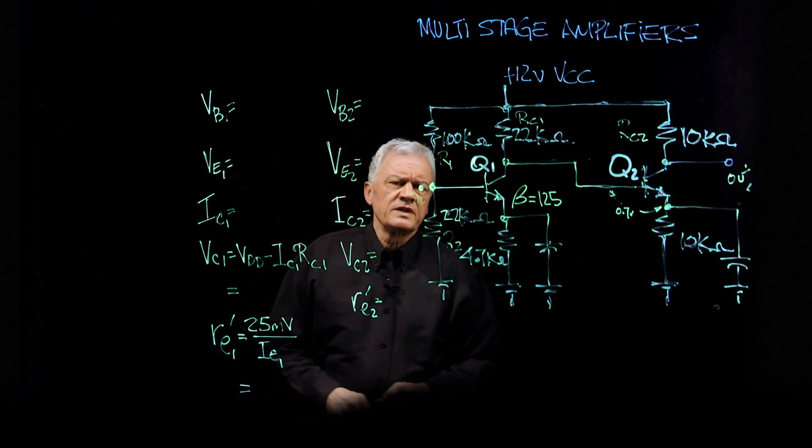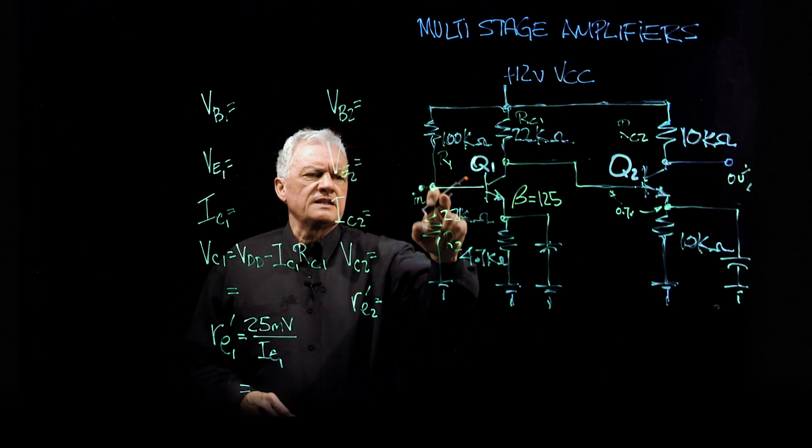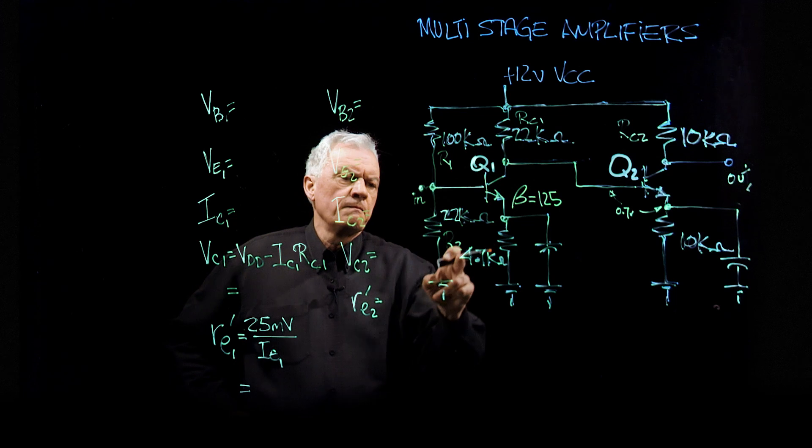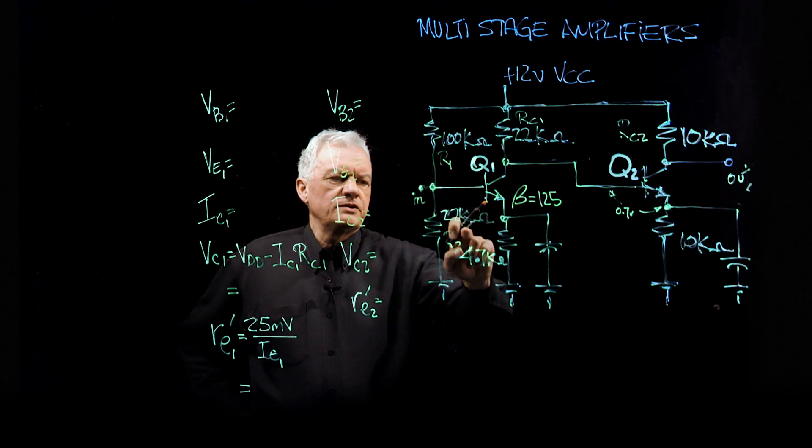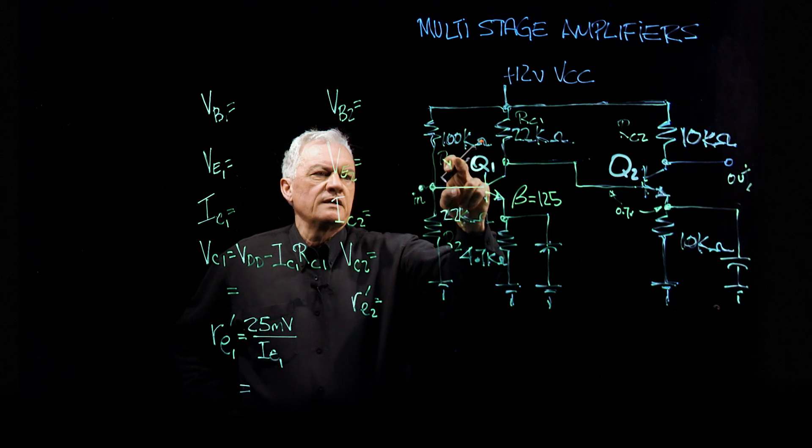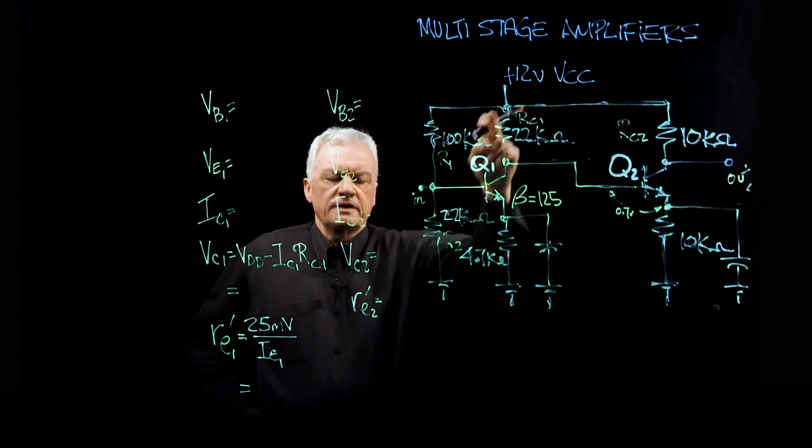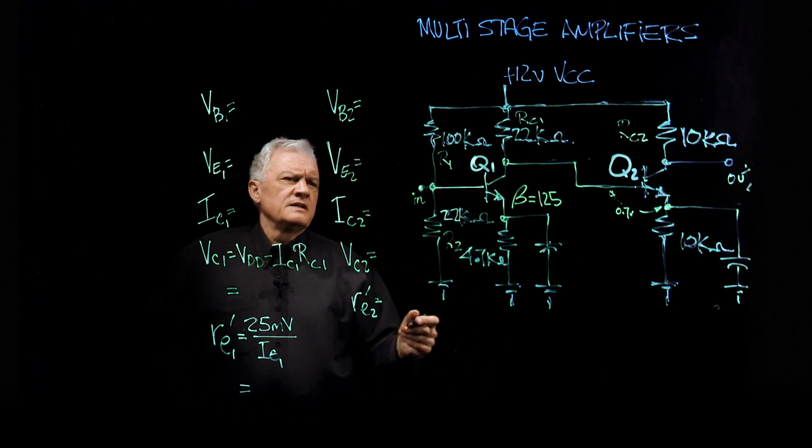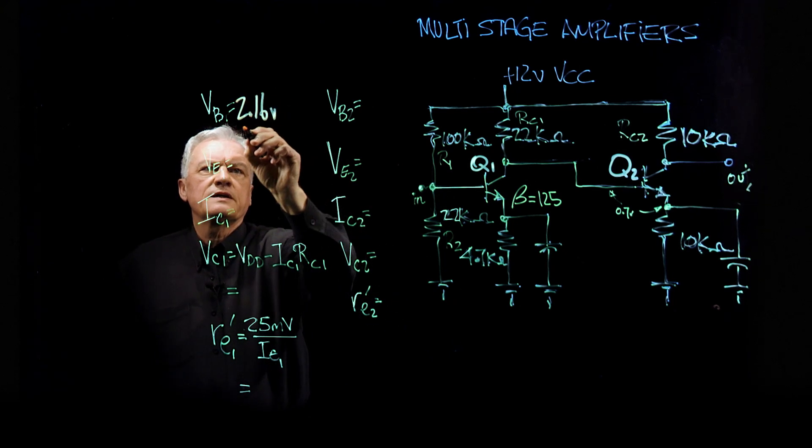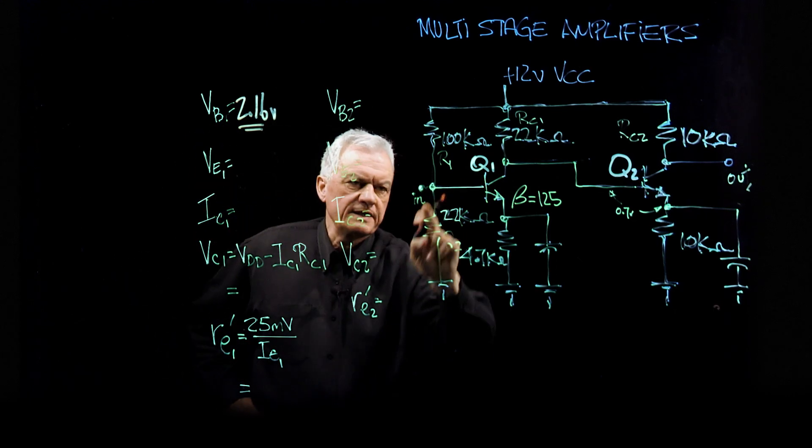So the first thing we do is what is the voltage at the base. And if we recall from our voltage divider video, it's going to be 22K divided by 22K plus 100K times the voltage over here. So if you do that particular math, simple calculator, you should come up with 2.16 volts. And that's the voltage at this base.